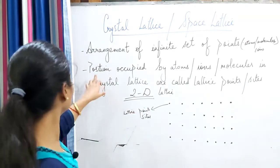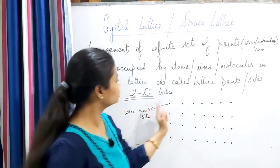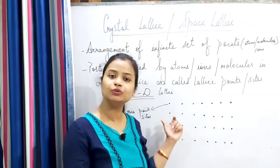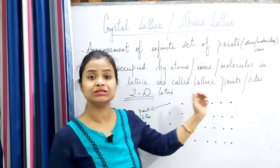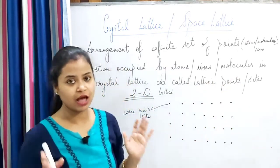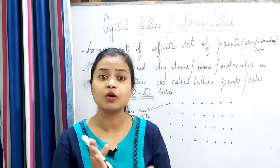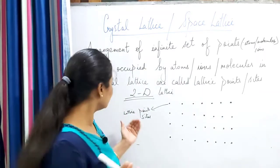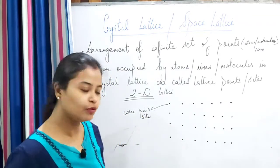Let us see the definition of lattice points. Position occupied by atoms, ions or molecules in a crystal lattice can be called lattice points or lattice sites. Crystal lattice is three-dimensional; two-dimensional we say a plane lattice. So, positions occupied by atoms, ions or molecules in a crystal lattice are called lattice points or sites. These are the constituent particles which are arranged in a particular order in order to give the entire crystal.